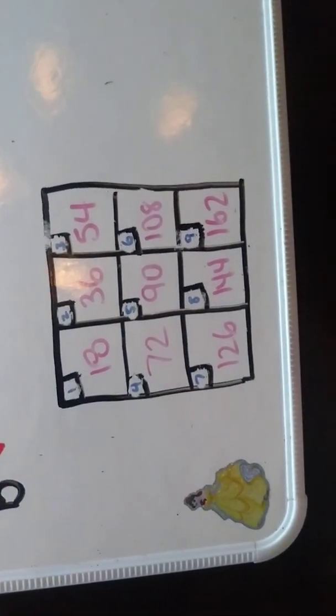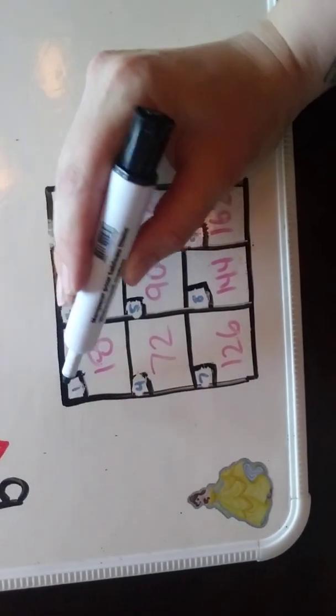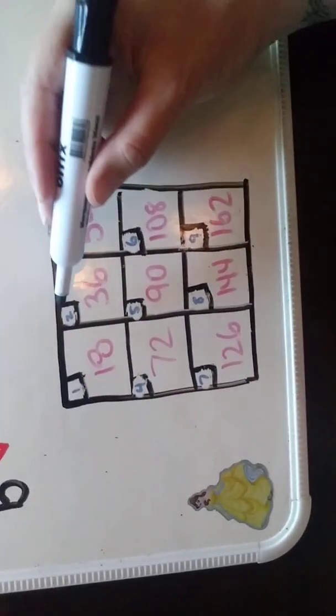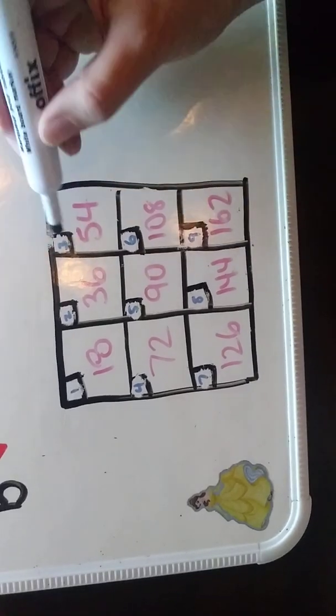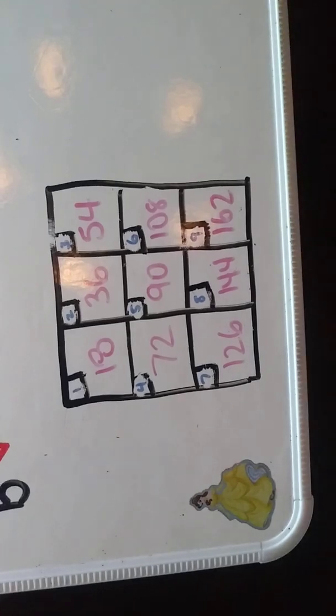So I made it just like I made the last one except this time I'm counting by 18. So 1 times 18 is 18, 2 times 18 is 36, 3 times 18 is 54 and so on. So I'm going to use this to help with my long division. So let's get started.